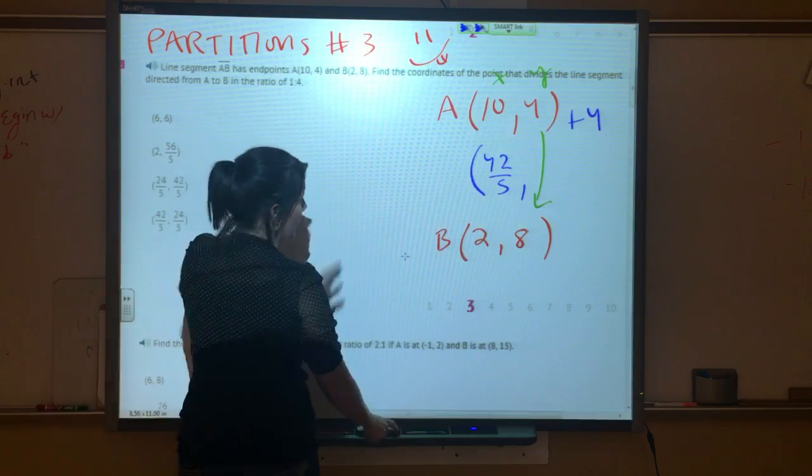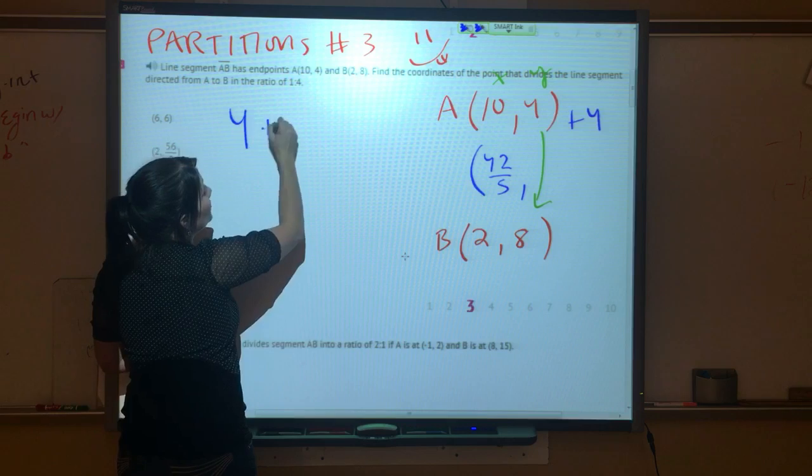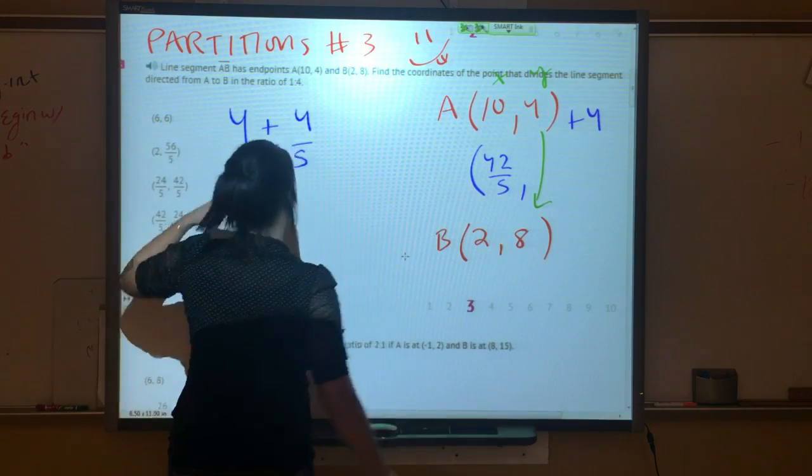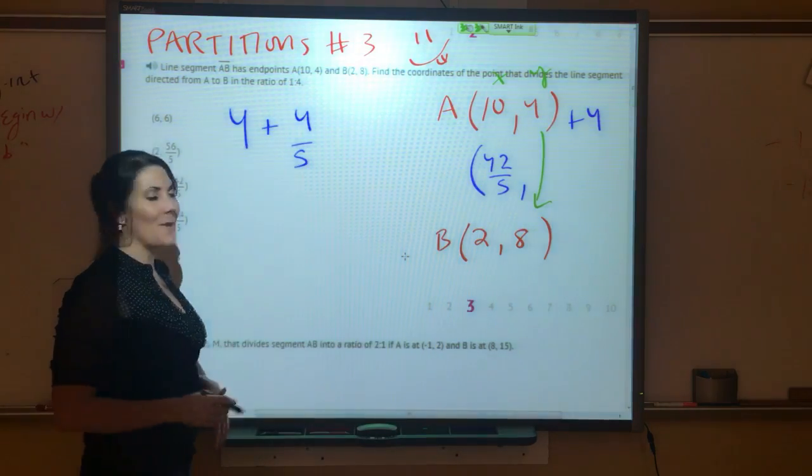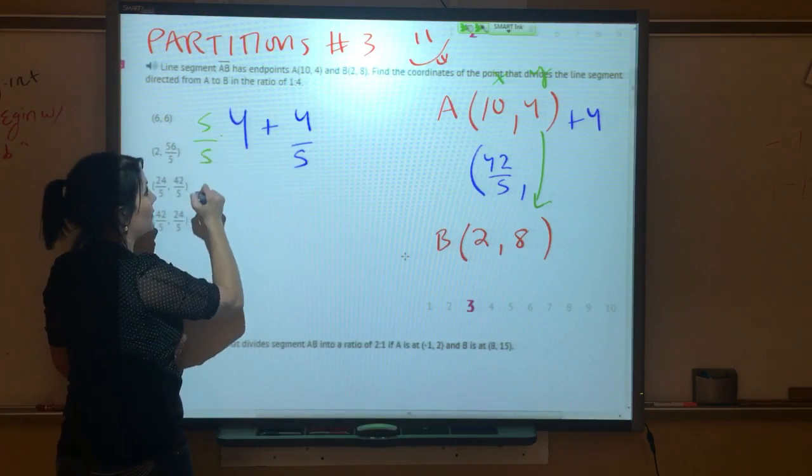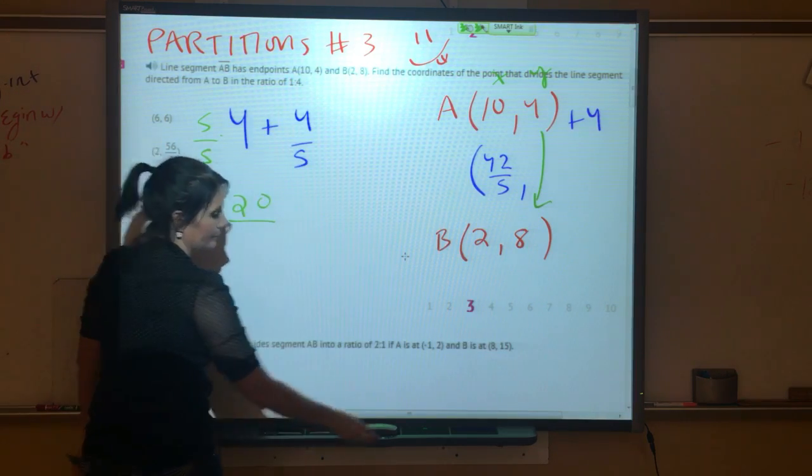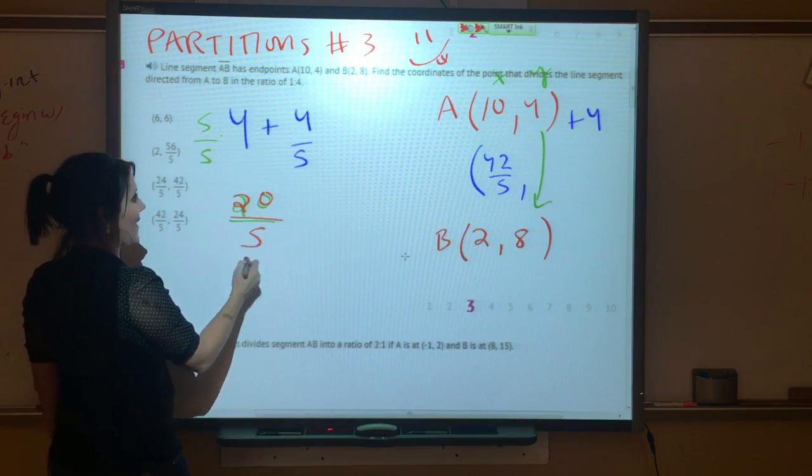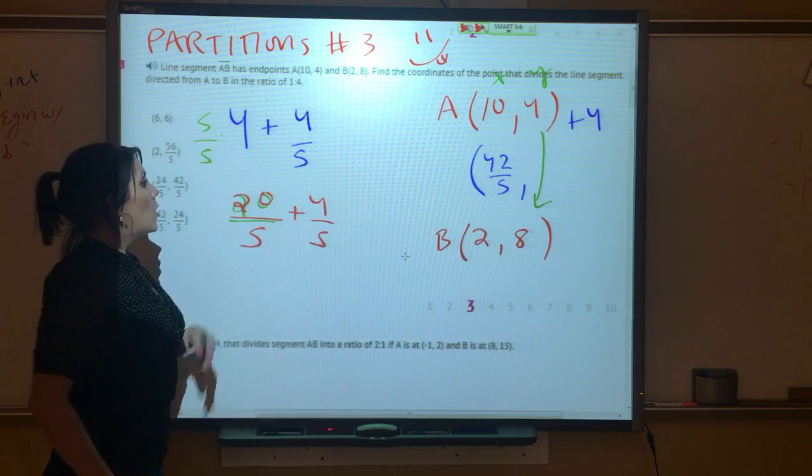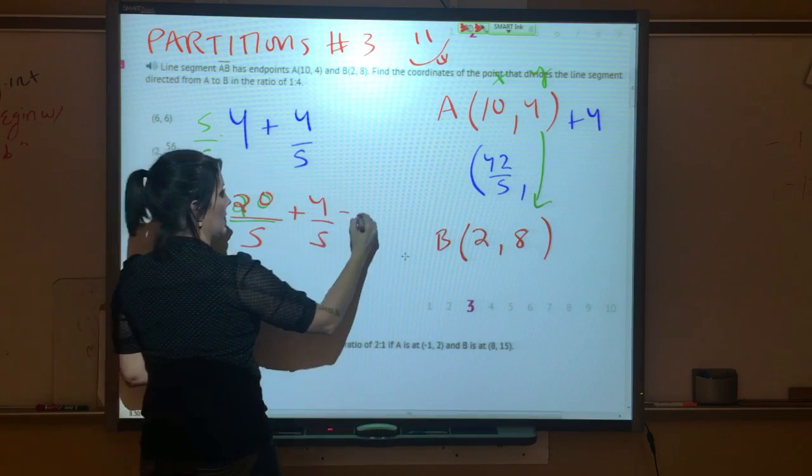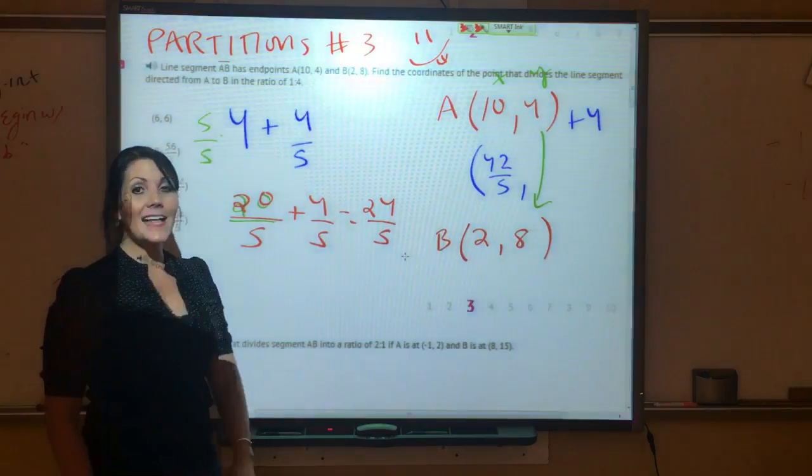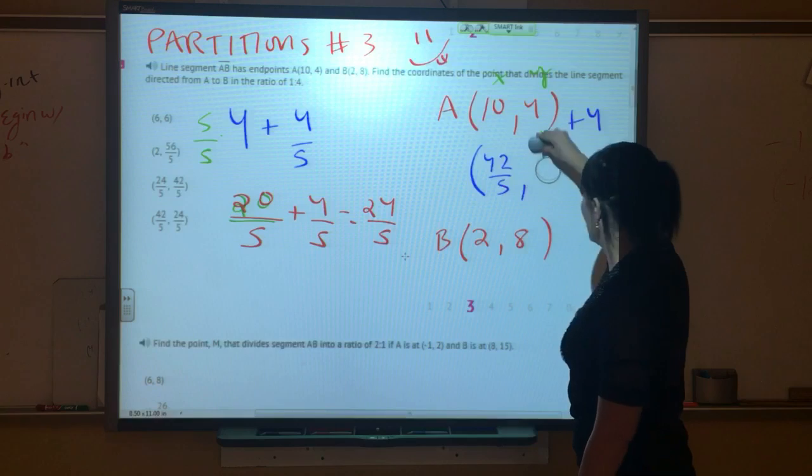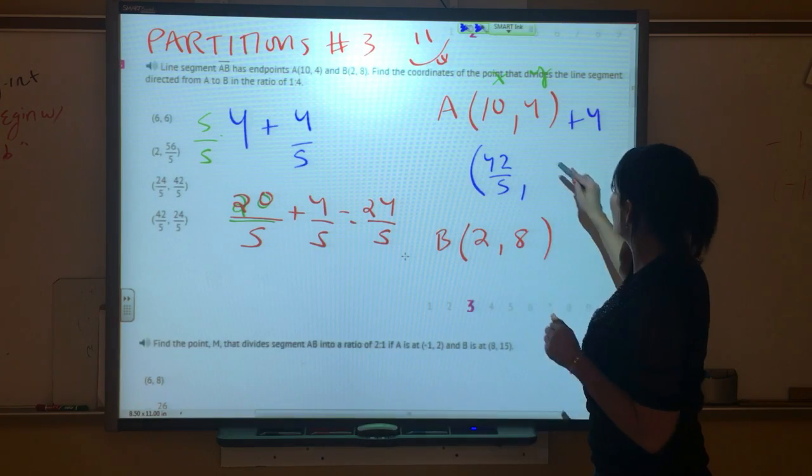So we're going to take our 4 right here, and we are going to add 4/5 to that. Now, same thing as before, we have to have a common denominator, so we're going to multiply this 4 by 5/5. We get 20/5 plus 4/5. When we do that, we get 24/5. That's it, leave it as an improper fraction. There's nothing wrong with that. So this is going to be 24/5.